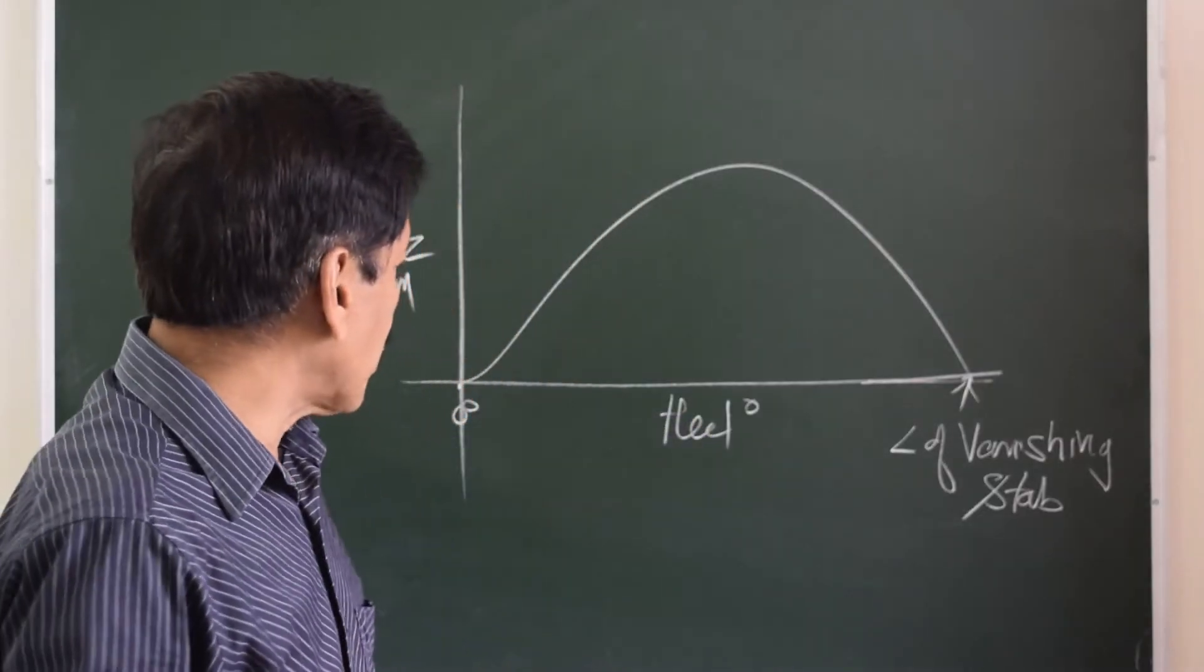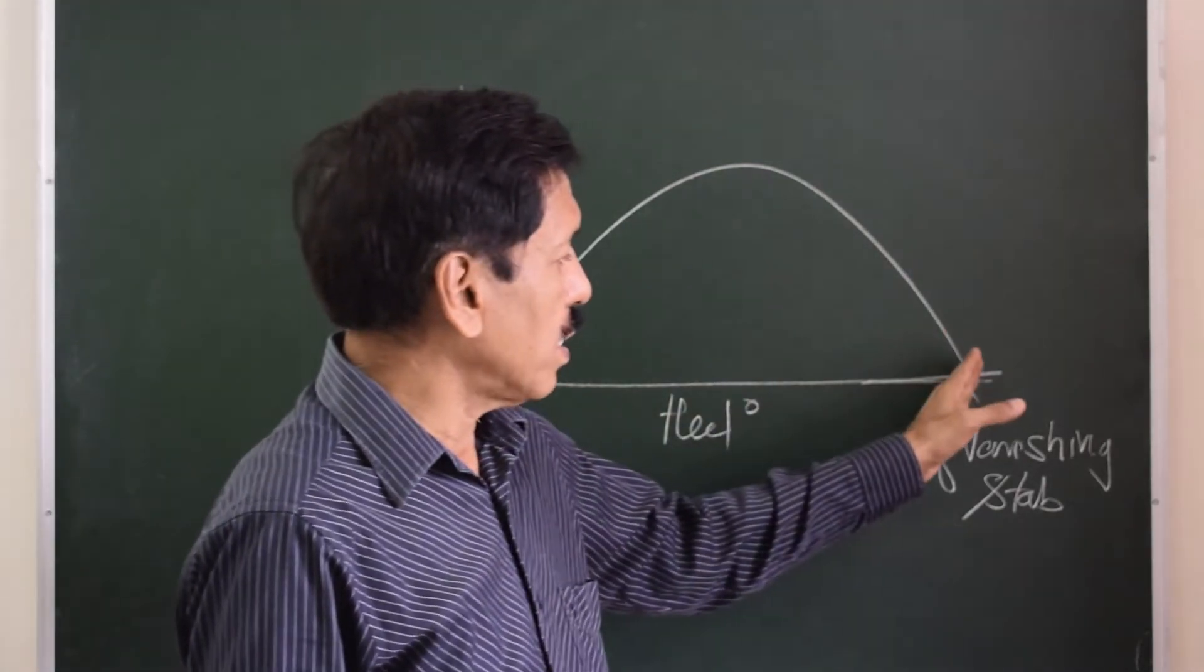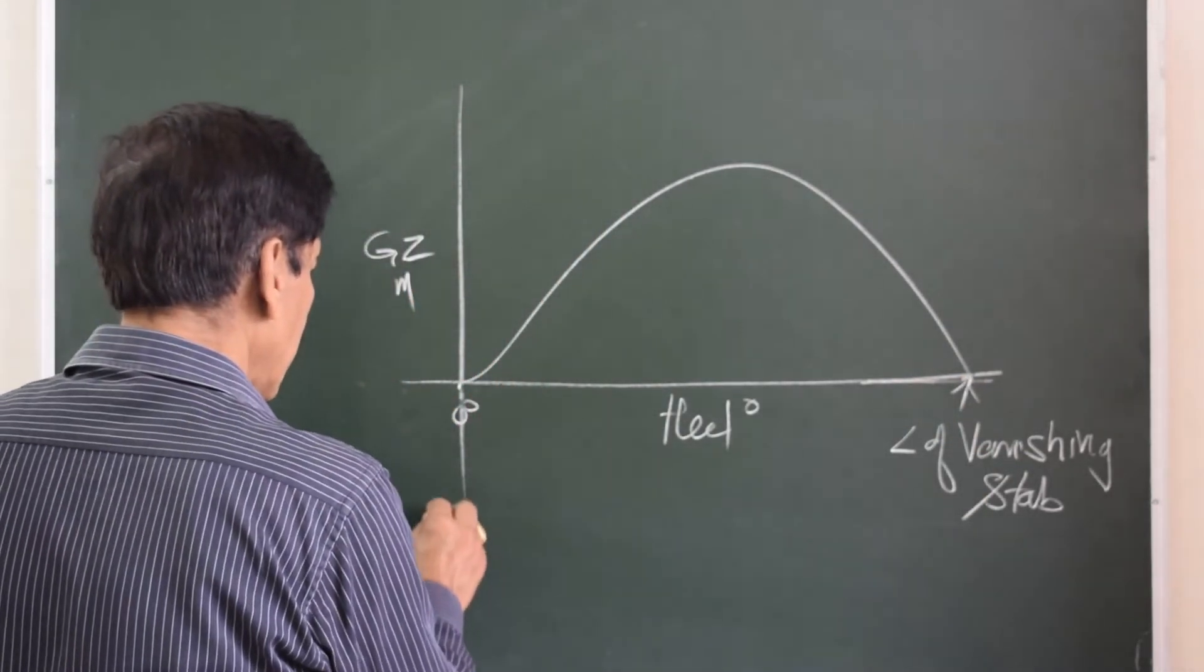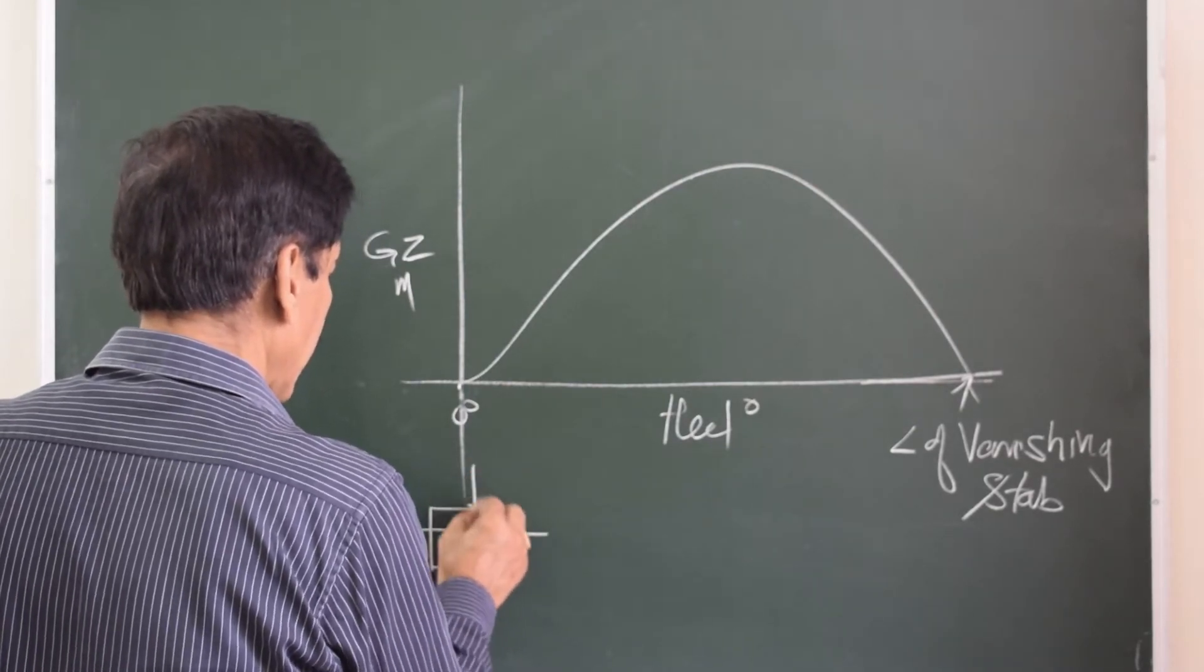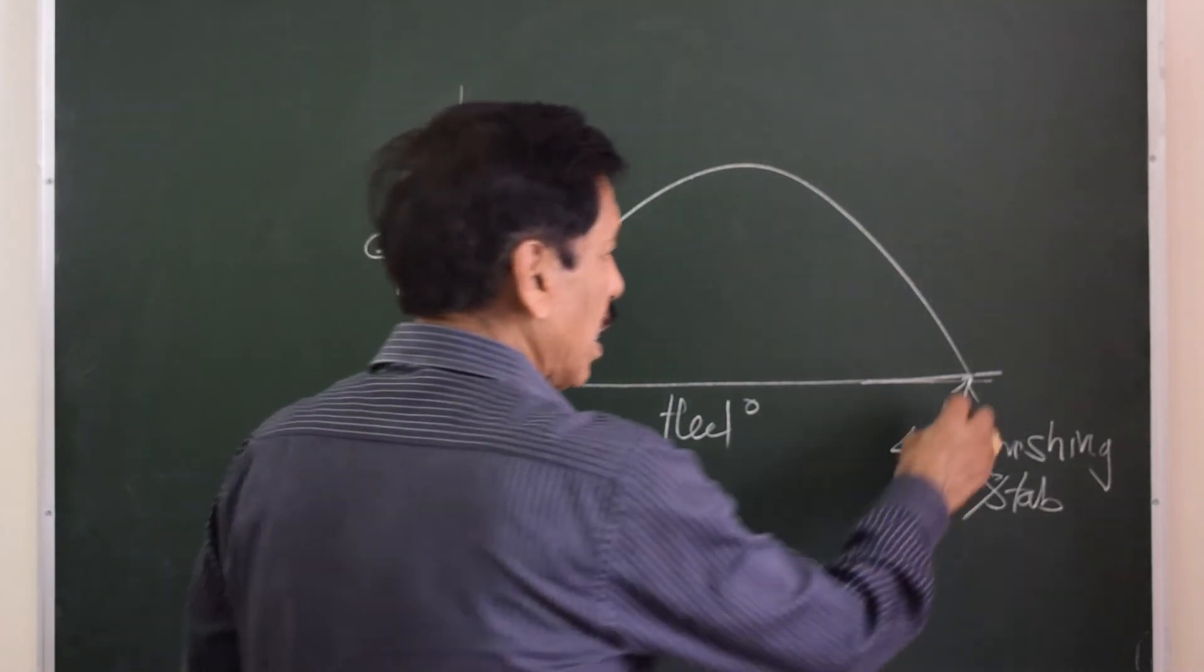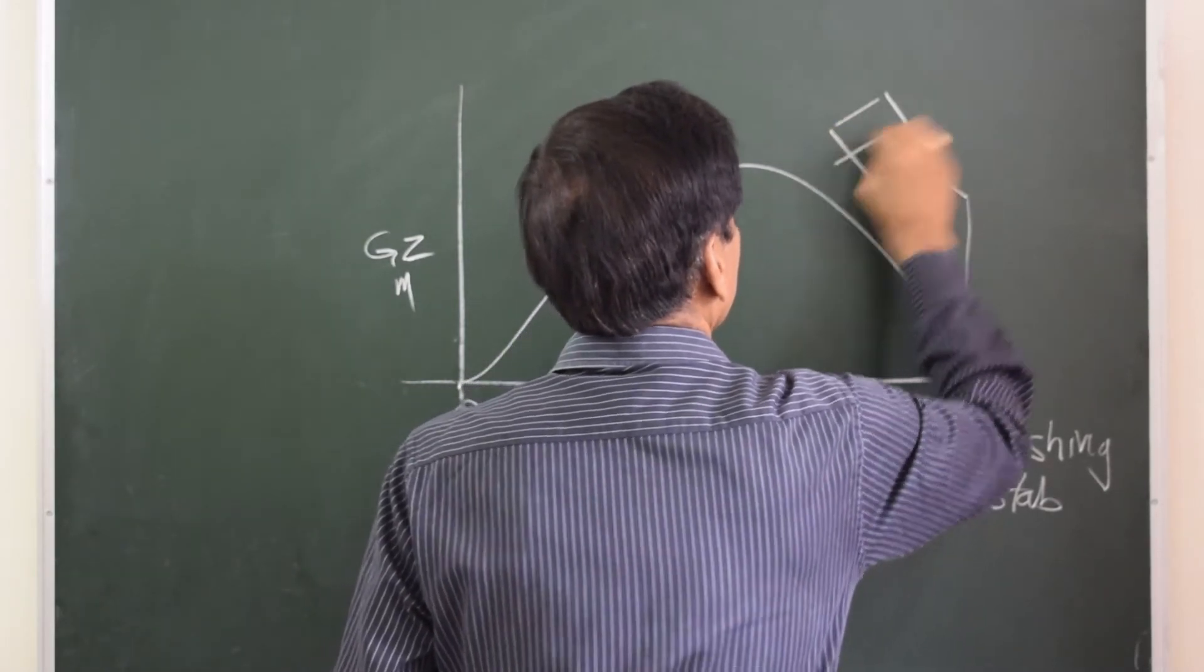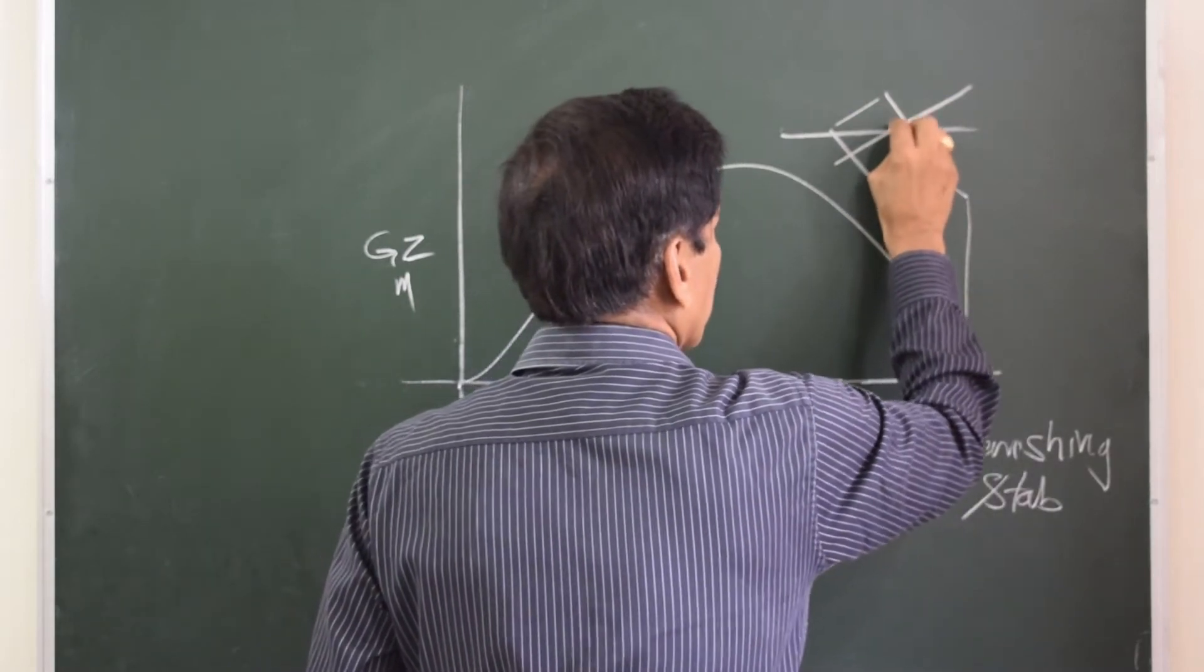Now looking at this curve, we can see this is upright equilibrium and this is equilibrium at the angle where positive stability vanishes. It means that this vessel has the center of buoyancy and center of gravity in a vertical line, possible at upright angle and also at the angle, may be say 80 degrees.